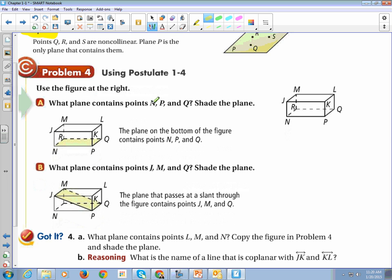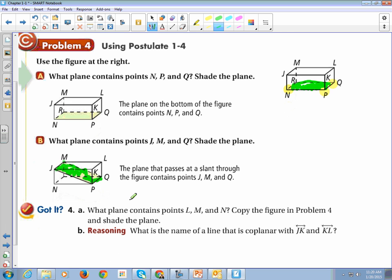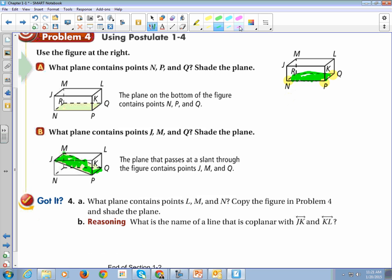Let's look at our example problem. What plane contains points N, P, and Q? Shade the plane. N, P, Q. And that is this bottom. The plane on the bottom of the figure contains N, P, and Q. What plane contains J, M, and Q? And shade the plane. Oh, that's this little diagonal one right here. What plane contains points L, M, and N? That's this kind of diagonal one.